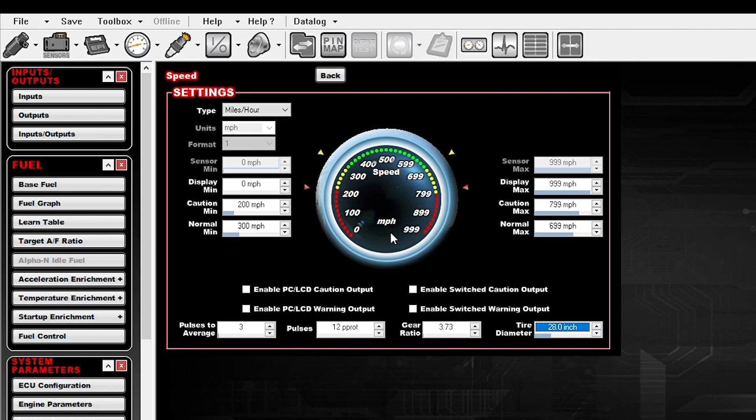Now you can see that this gauge here goes to 999. You can change that display max to say 200 if you want. So now it's zero to 200. You can change warnings, maximums, minimums, things like that.